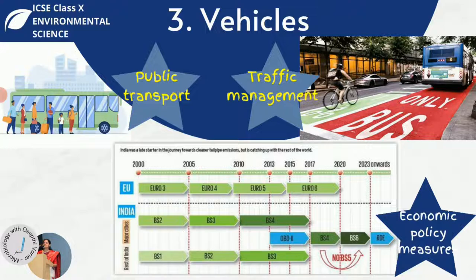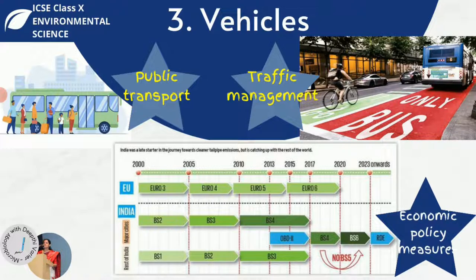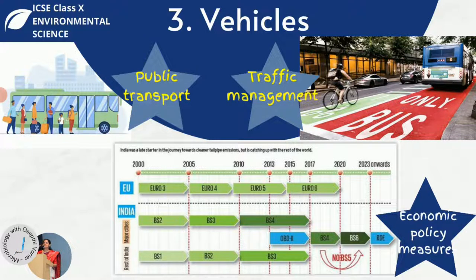Since 2000, Euro norms have been followed in India under the name Bharat Stage Emission Standards (BS standards). You would have seen stickers for this on vehicles. Currently all new vehicles must be BS 6 standard compliant, while BS 3 and 4 are in use, with BS 4 in use since 2017. These standards specify how clean and how fuel efficient a vehicle is, and are set up by the Central Pollution Control Board.